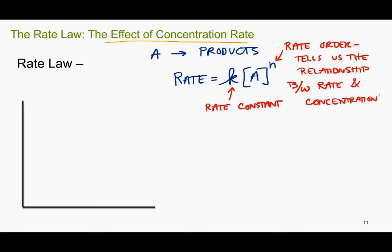It turns out that value of the exponent can be anything, it can be any decimal. But usually what we'll focus on is rate orders of zero, one, or two, because those are the most common. Really one and two are the most common. We have to think about what those would look like and what those mean. Let's think about what should be the relationship between concentration and reaction rate.